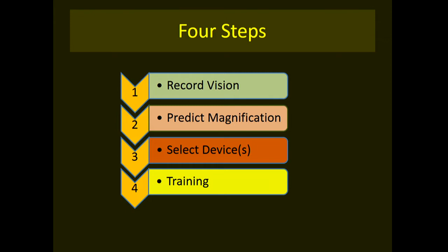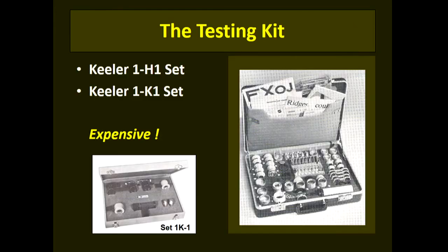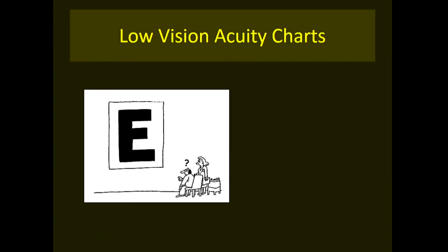There are four important steps to prescribing low vision aids in clinical practice. The first step is recording vision. The second is to predict magnification. The third is to select a device and dispense it. The fourth is to train the client in using the device. Various testing kits are available, such as the Keeler 1H1 and 1K1 sets, though they are expensive. In practice, whatever material is available in the clinic can be used.